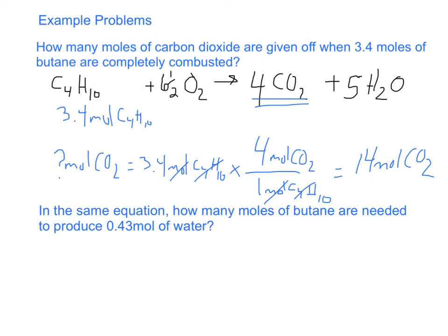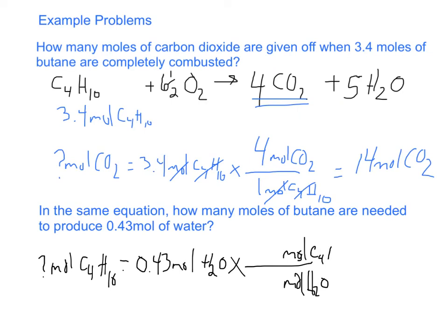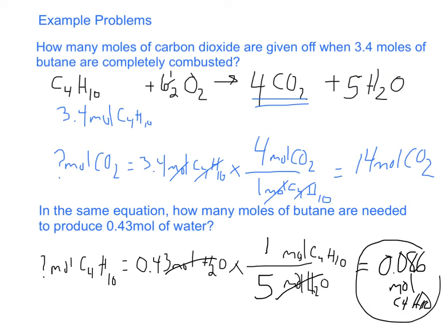Same equation above. We want to know how many moles of butane are needed to produce 0.43 moles of water. We need 0.43 moles of H2O. We know we want moles of water down here, and moles of butane on top. Go up to the equation and pick it out. Water has a 5, butane has 1. So it's 0.43 divided by 5, which equals 0.086 moles of butane. That's how these are done.